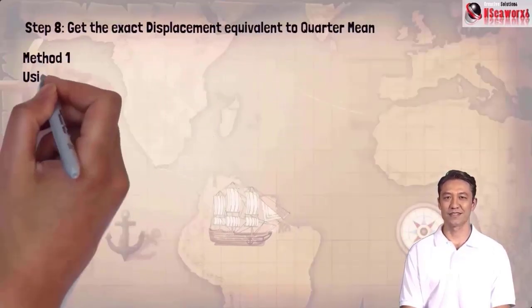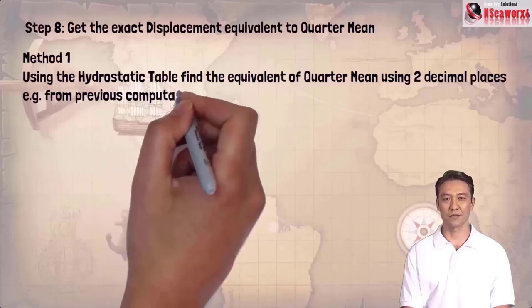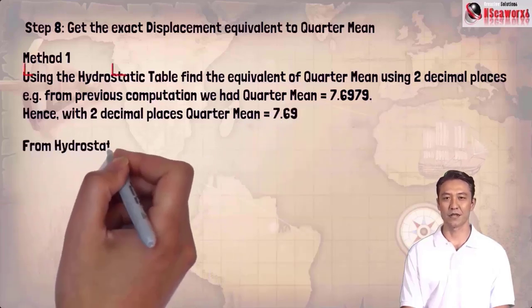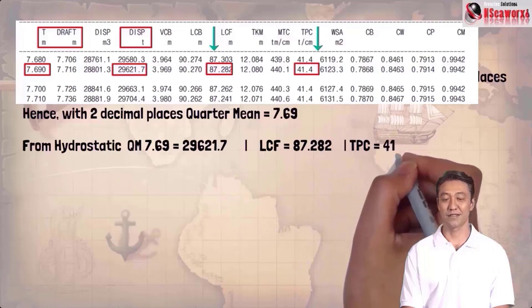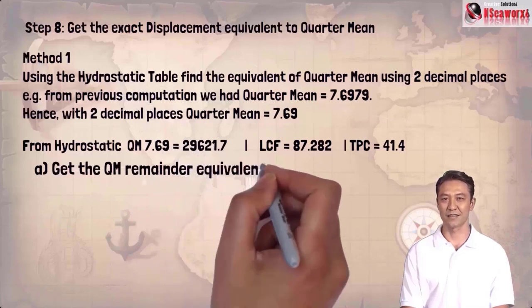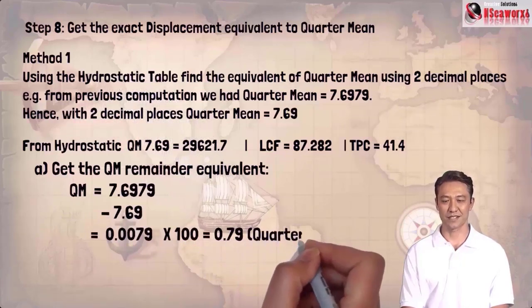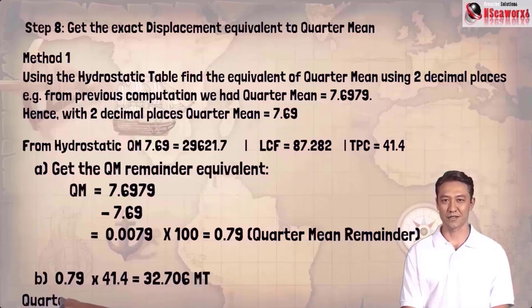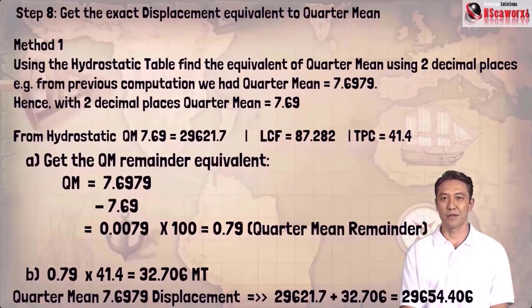Step 8: get the exact displacement equivalent to quarter mean. Method 1 — using the hydrostatic table, find the equivalent of quarter mean using two decimal places. Quarter mean = 7.6979, so with two decimal places QM = 7.69. From the hydrostatic table: QM 7.69 = 29621.7 tons, LCF = 87.282, TPC = 41.4. Get the QM remainder: 7.6979 minus 7.69 = 0.0079, times 100 = 0.79. Then 0.79 times TPC 41.4 = 32.706 metric tons. So quarter mean 7.6979 displacement = 29621.7 plus 32.706 = 29654.406 metric tons.